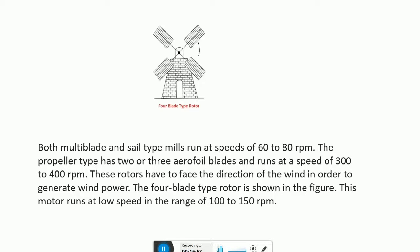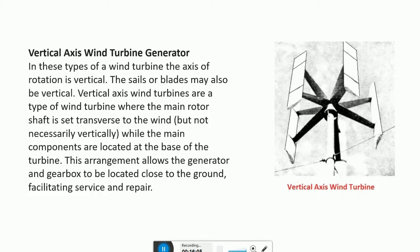The rotors are made up of wood or a special type of cloth. Vertical axis wind turbines are a type where the axis of rotation is vertical, hence the name. The cells or blades may also be vertical. The main rotor shaft is set transverse to the wind, but not necessarily vertically, while the main components are located at the base of the turbine.